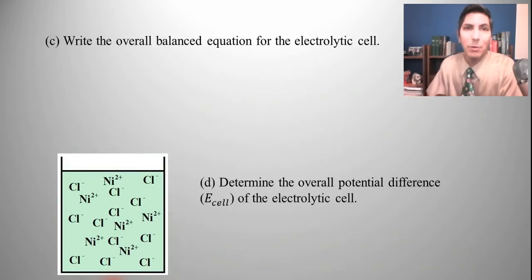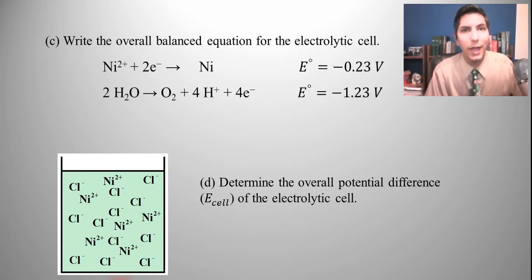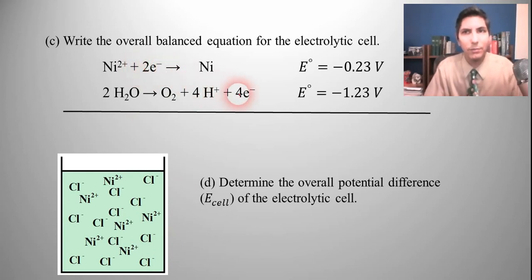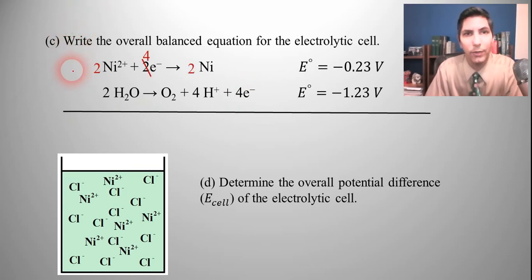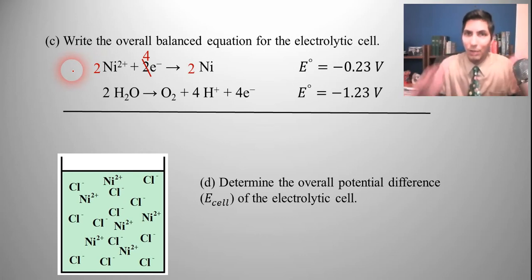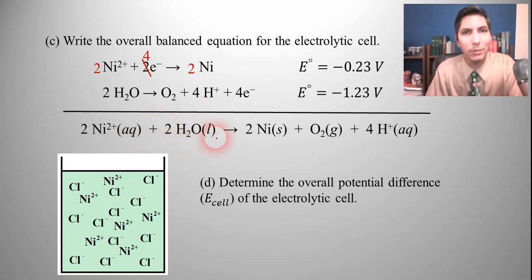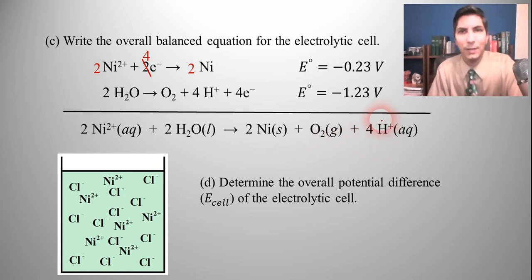Let's go to part C: write the overall balanced equation for this electrolytic cell. We take those two selected half-reactions and add them together. We have two electrons in the reduction half-reaction and four electrons in the oxidation half-reaction, so we multiply the top half-reaction by two. Now four electrons cancel on both sides. When we add it up: two nickel-2 ions (aqueous) plus two water molecules (liquid) yield two nickel atoms (solid), one oxygen molecule (gas), and four hydrogen ions (aqueous).